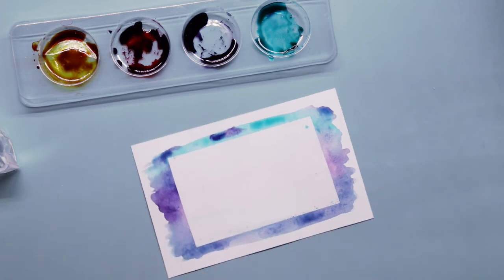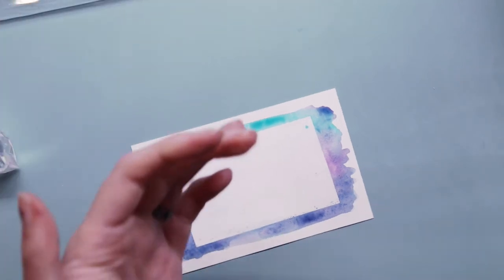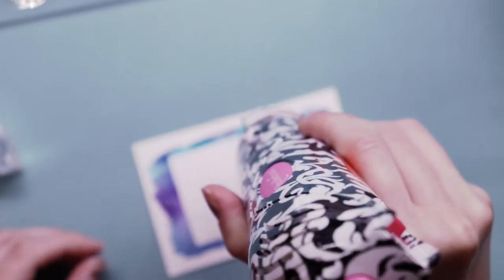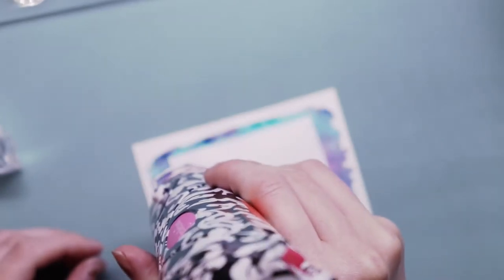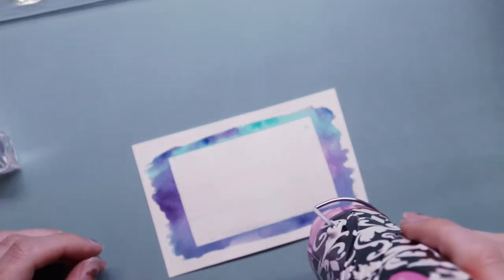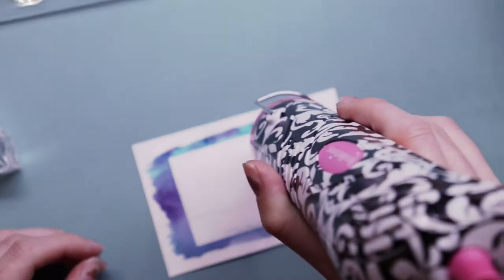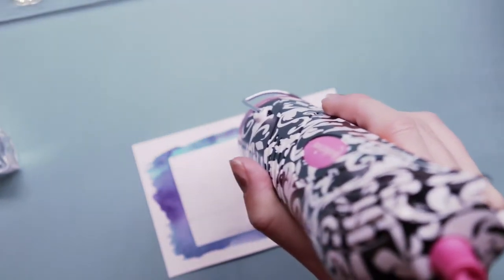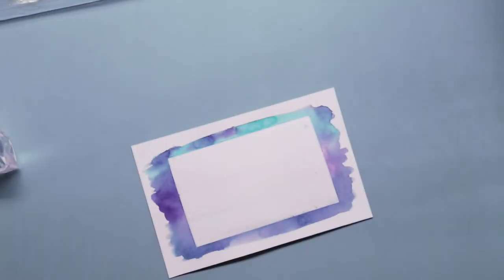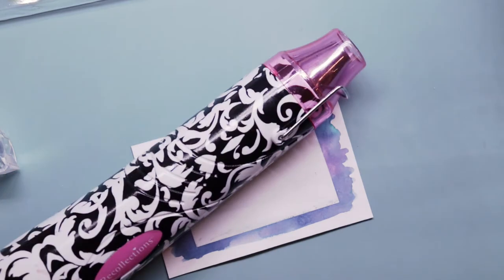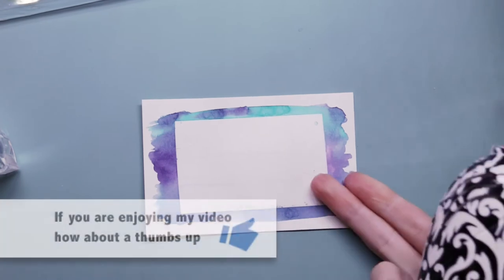So I just dabbed off the excess just so that I'm not dealing with a mess. And I'm using my heat gun to dry the paint but not only that, it's also going to help me remove the tape because the tape is going to bond to the paper and the heat is actually going to relax the adhesive on the tape. So that's going to make it a lot easier for me to remove the tape from this paper.